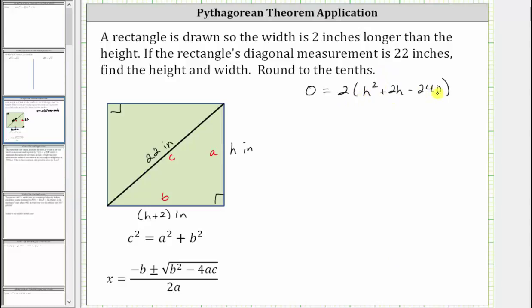The trinomial inside the parentheses does not factor, and therefore we'll have to use the quadratic formula to determine the values of h that make h squared, plus two h, minus 240 equal to zero. We'll notice how a is equal to one, b is equal to two, and c is equal to negative 240.